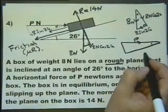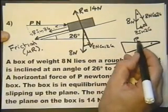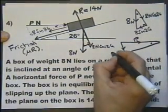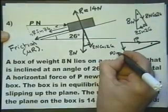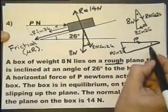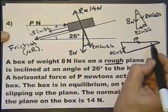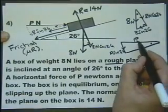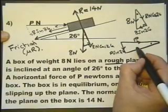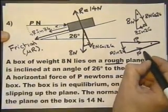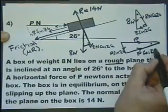And this is 26 degrees. Sine is opposite over hypotenuse, so this force is actually P multiplied by the sine of 26. And cosine is adjacent over hypotenuse. Therefore, this force represents P cosine 26.